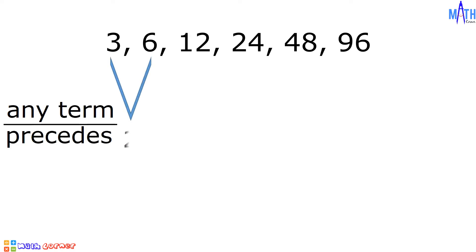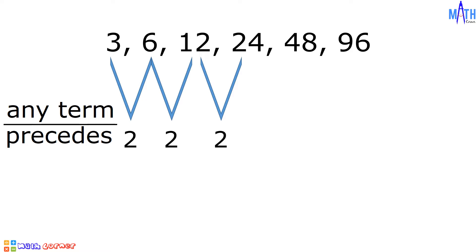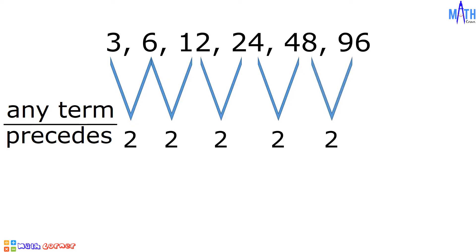6 divided by 3 is equal to 2. 12 divided by 6 is equal to 2. 24 divided by 12 is equal to 2. 48 divided by 24 is equal to 2. And 96 divided by 48 also equals 2. Therefore, the common ratio is equal to 2.